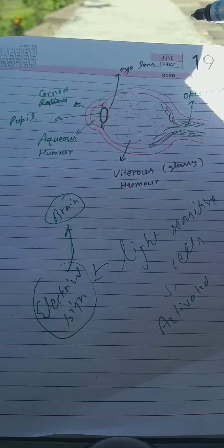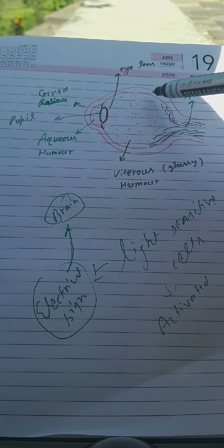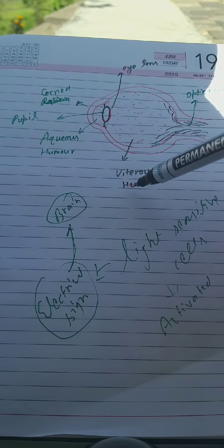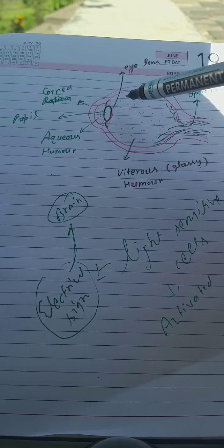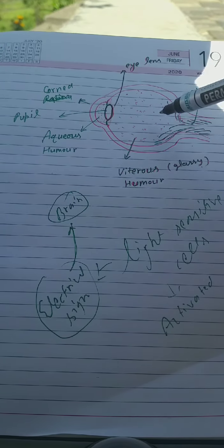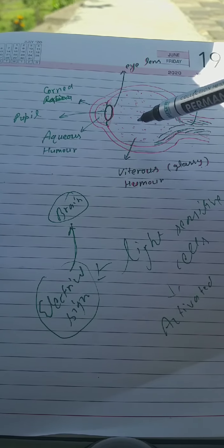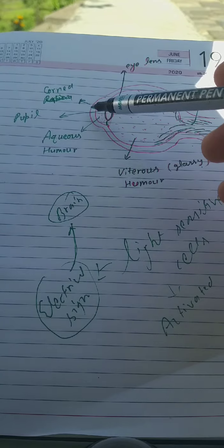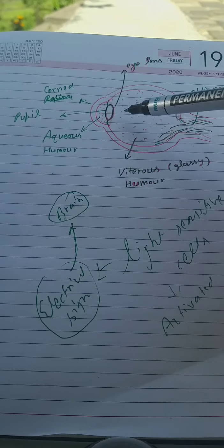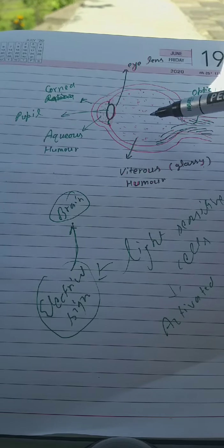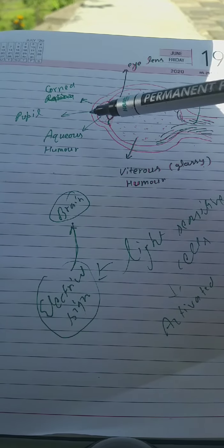Now, the portion between the lens and this retina is filled with a jelly-like material, and this material is known as the vitreous humor — 'vitreous' means glassy. It is not solid like glass, but it is transparent like glass, meaning light rays pass through this material and then fall on the retina.